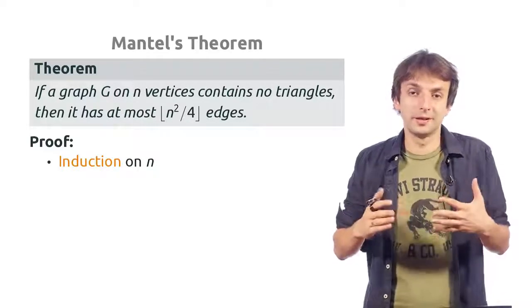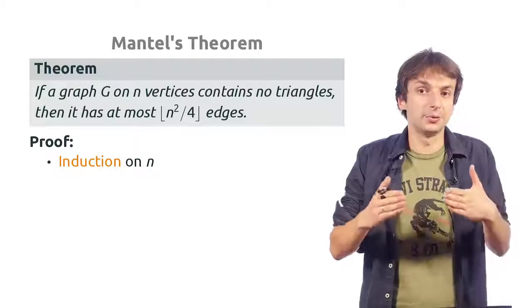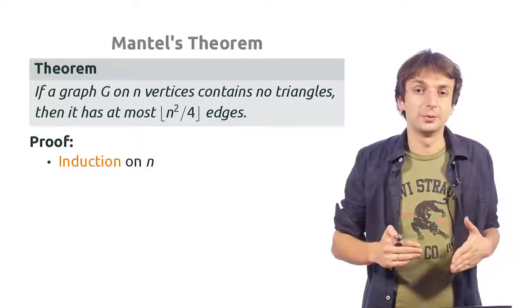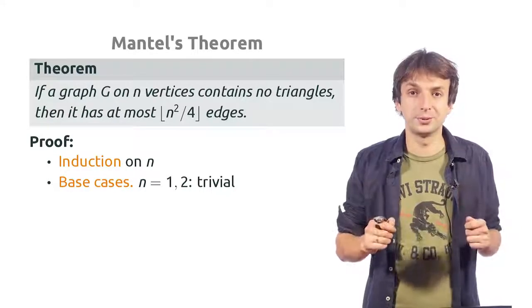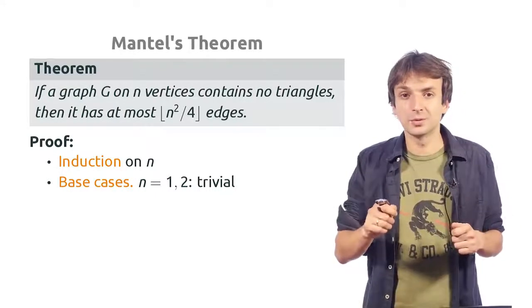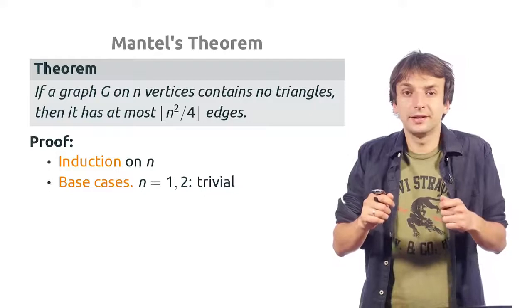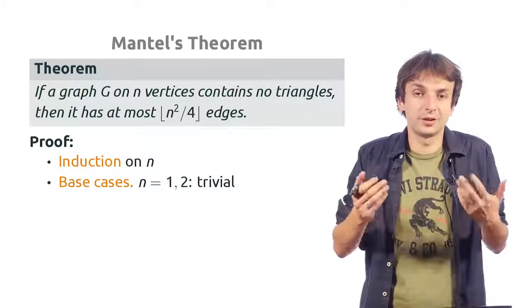We will prove this theorem again by induction on n, the number of vertices in our graph. And we will consider two base cases, n equals 1 and n equals 2. When n equals 1, the graph can contain only 0 edges because there is only 1 vertex.